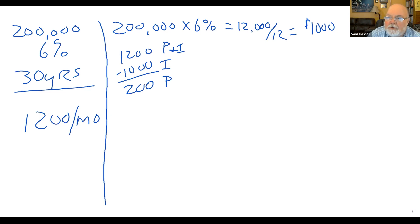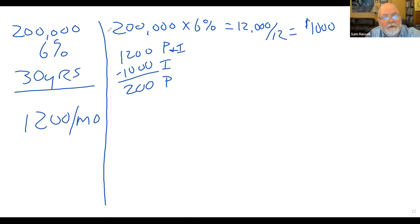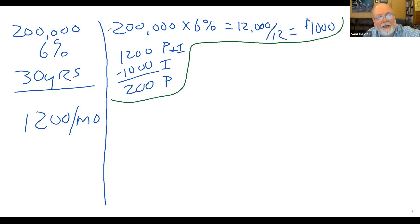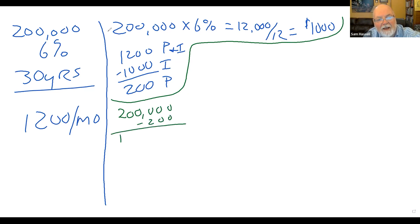What happens in month two? I don't owe $200,000 anymore. So in month two I get to pay something a little different. Now I owe $200,000 minus the $200 I paid off, which means I have $199,800. That's what I still owe, times 6%.